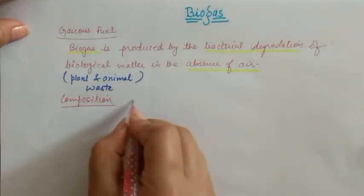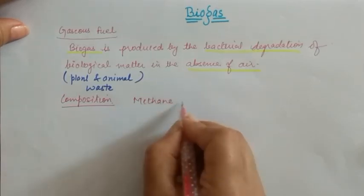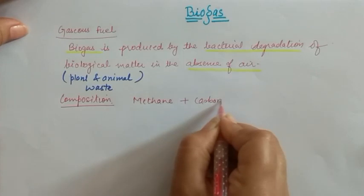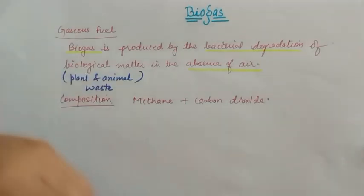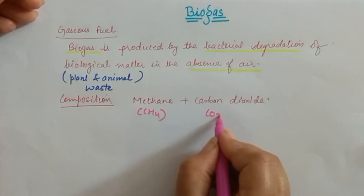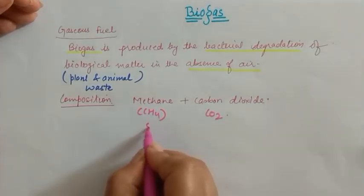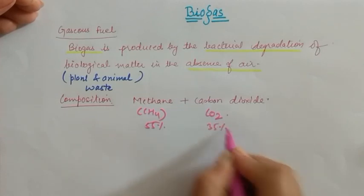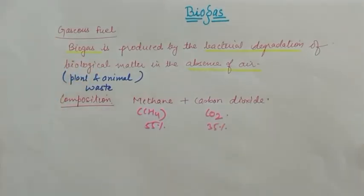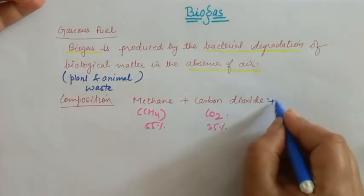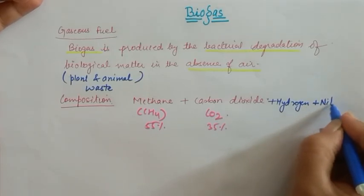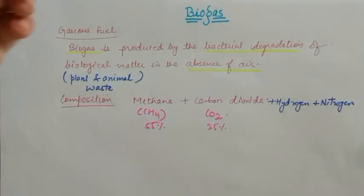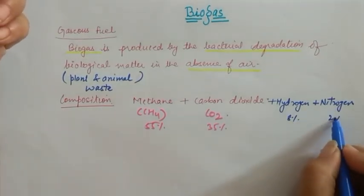The composition of biogas: it mainly consists of methane plus carbon dioxide. Methane is CH4 and carbon dioxide is CO2. Around 55% methane and 35% carbon dioxide. Along with these, a small amount of other gases are also present, such as hydrogen and nitrogen, but these gases are present in small amounts — approximately 8% and 2% respectively.